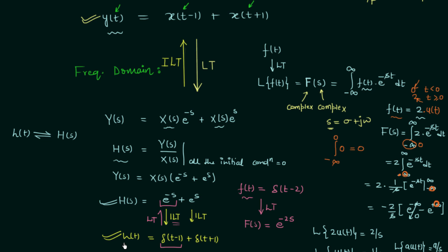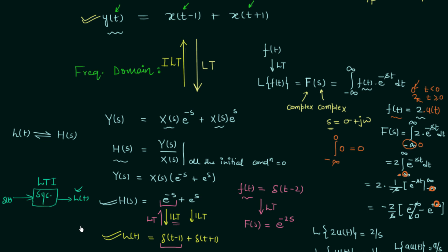The impulse response is h(t) = δ(t−1) + δ(t+1), which is the impulse response for the system with this relationship. If you provide an impulse as the input, the output will be δ(t−1) + δ(t+1). One important clarification: impulse response and transfer function are only defined for LTI systems, so whenever I say impulse response of a system, it is understood I am talking about an LTI system. That is all for this lecture — if you have any doubt ask in the comment section. See you in the next one.